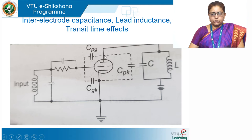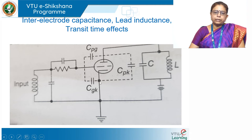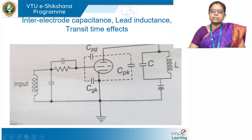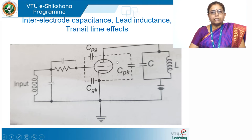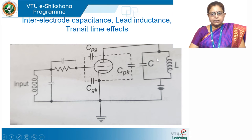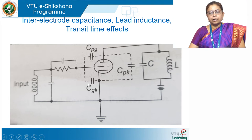Now let us see the effect of high frequency on vacuum tubes, in particular the triode. Look at this structure of a triode: it has a cathode, a grid, and an anode. I have shown three capacitances in dotted lines. These dotted lines indicate that these capacitances are not actually physically connected in the circuit — they are not actual components. They come up only when the circuit is powered with a high frequency signal.